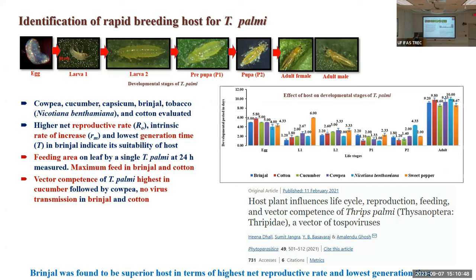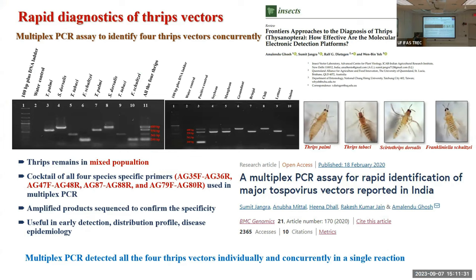We thought of identifying the most suitable host for Thrips parvispinus. We studied different plants that are known hosts of thrips: cucumber, cowpea, capsicum, brinjal, tobacco, and cotton. We found that brinjal was the most suitable host for Thrips parvispinus in terms of population growth and generation times, and the feeding area was also maximum on brinjal and cotton. We also tested the vector competence of these hosts and found that cucumber was the most susceptible, followed by cowpea. However, no virus transmission was observed in the case of brinjal and cotton.